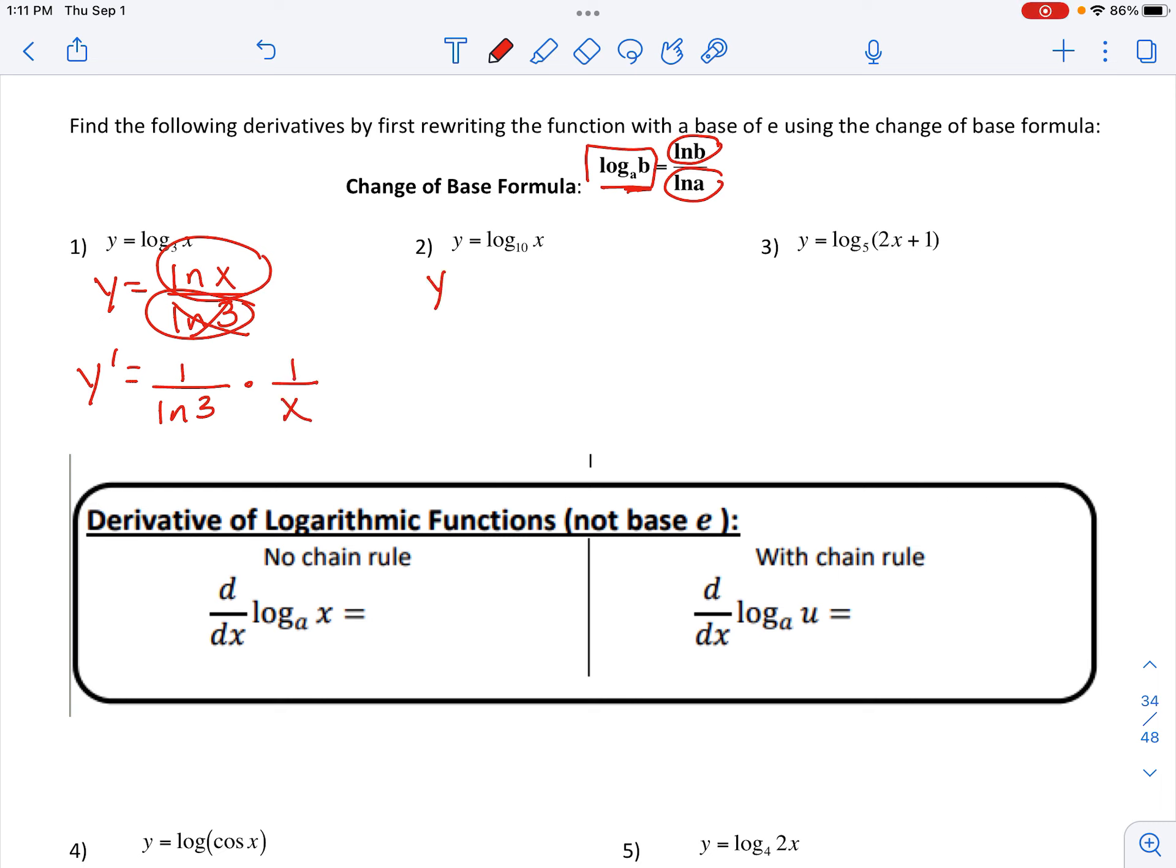Same thing here. So I'm going to rewrite it using the change of base formula, and then take the derivative. Notice again, you have a constant multiple. That natural log of 10, we can pull out, and then we just need to take the derivative of that, which is 1 over x.